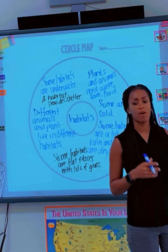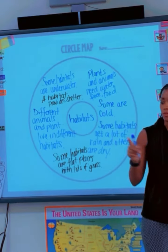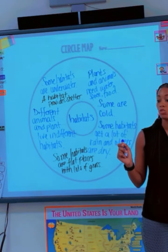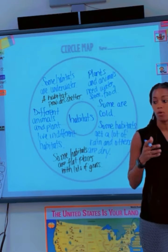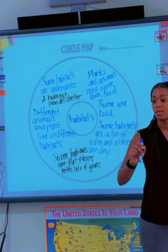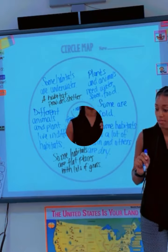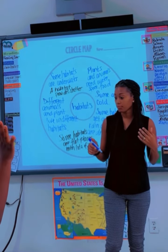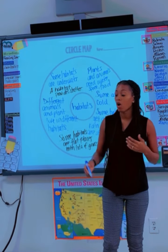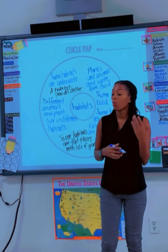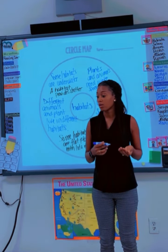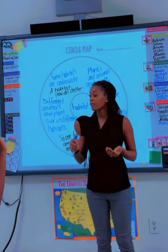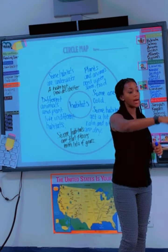What animals can we find in the grassland? Yes? Buffaloes. Buffaloes. What's another name for buffaloes? Yes? Bison. Bison. There are more names for habitats. Yes? Antarctica. Antarctica. What animals can we find there? Penguins. Penguins. What other habitats do we know about? Yes? The rainforest.